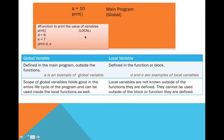Now let us see what happens if we try to access the local variables outside of this function. If I want to print the value of 'd' outside of this function in our main program, it would give us an error, because we are trying to print the value of this variable outside of the function. Local variables are not known outside the functions they are defined in — they cannot be accessed or used outside of the block or function they are defined in.